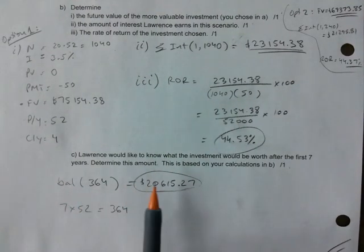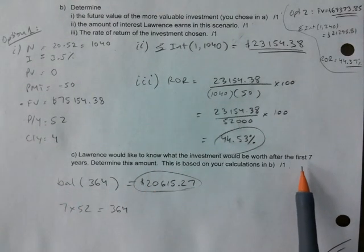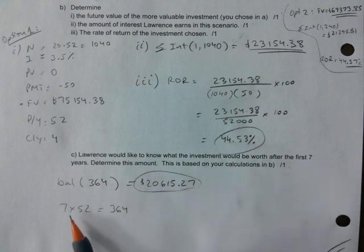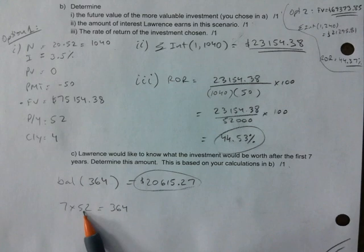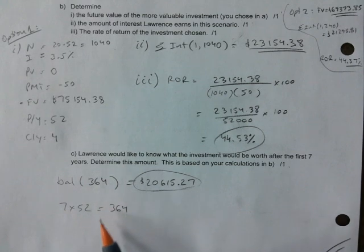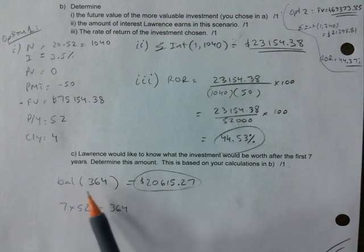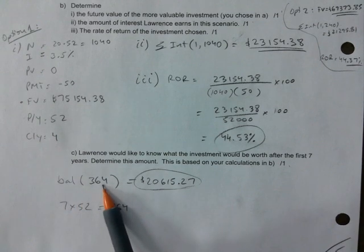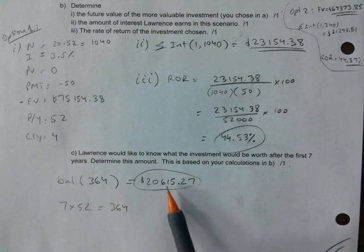And how much would you have after seven years? In my case, since I picked option one, that's seven years times 52. So, I'm looking at after making 364 deposits. So, the balance after that many deposits would be $20,615.27.